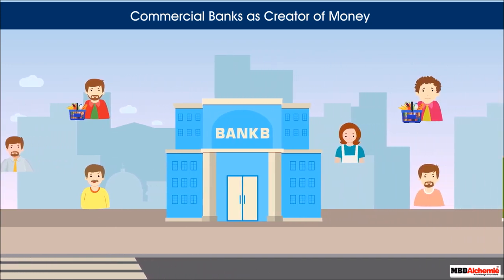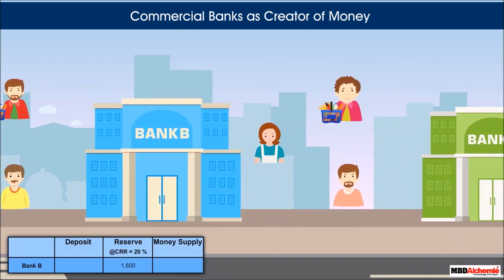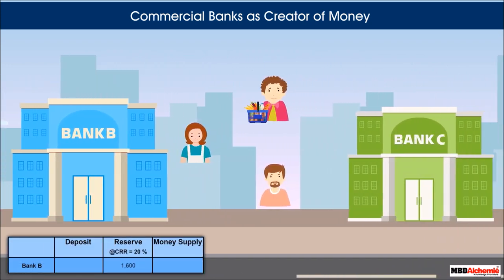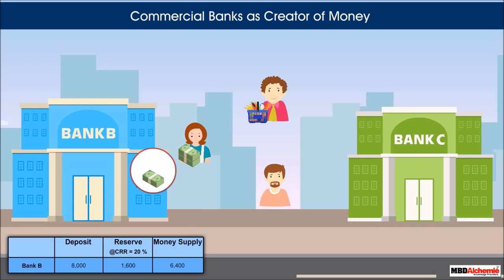After keeping a reserve of rupees 1,600, which is 20% of rupees 8,000, Bank B will lend out the balance rupees 6,400 to the borrowers. Those who receive rupees 6,400 from Bank B will spend the amount, and again the money will come back to the banking system, say in Bank C.